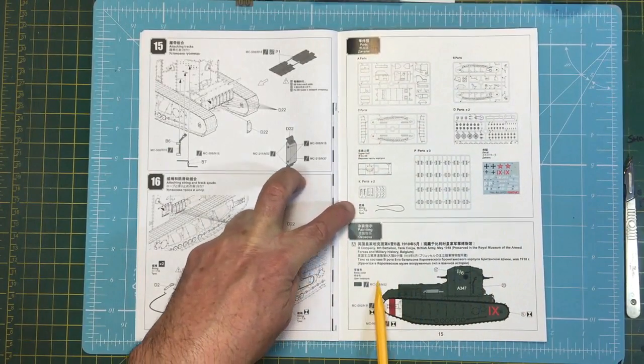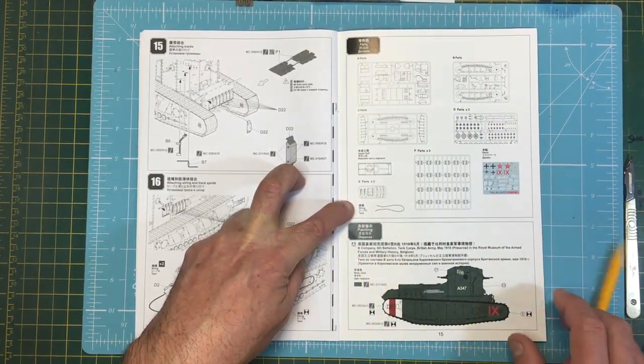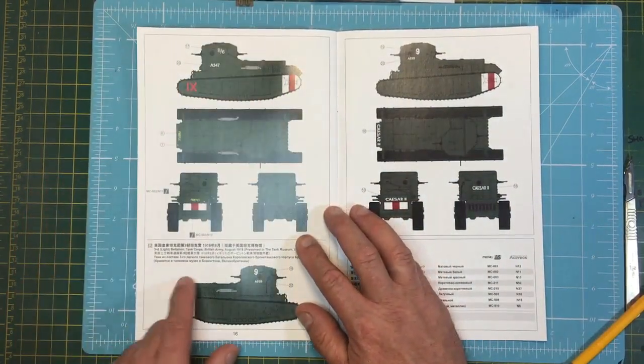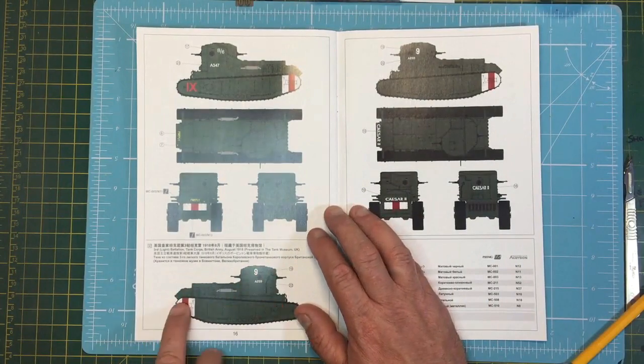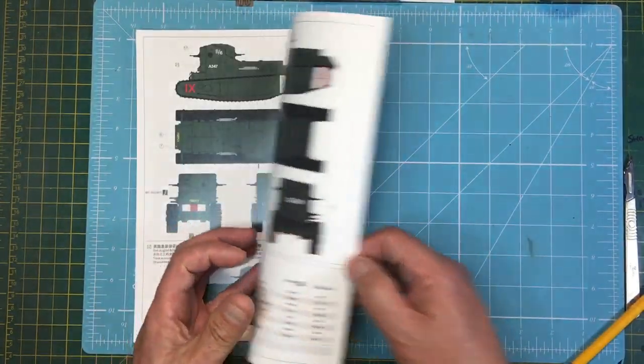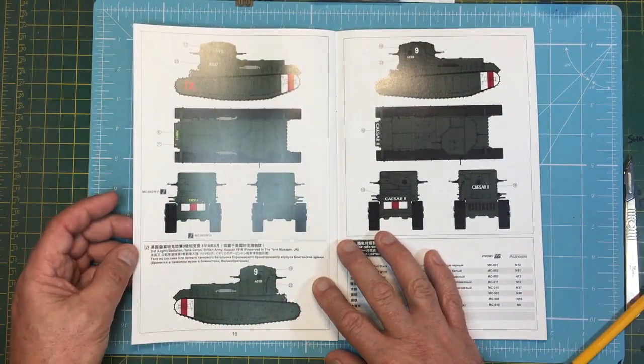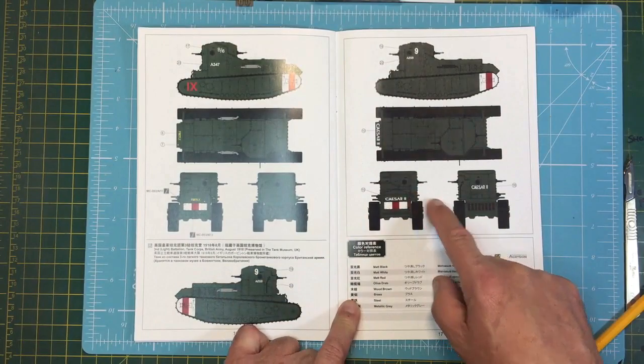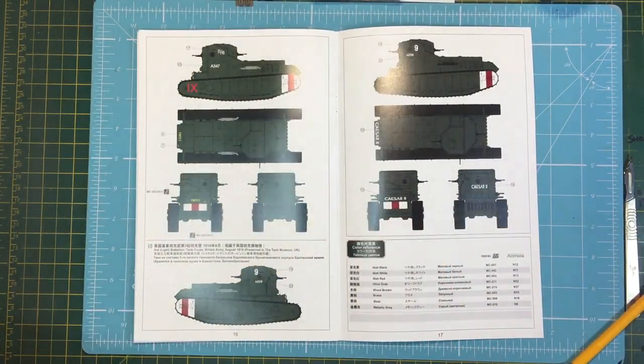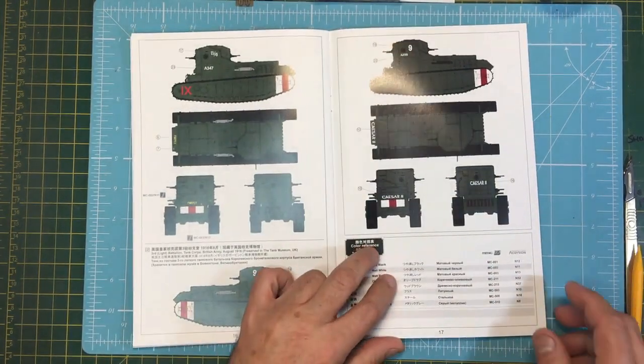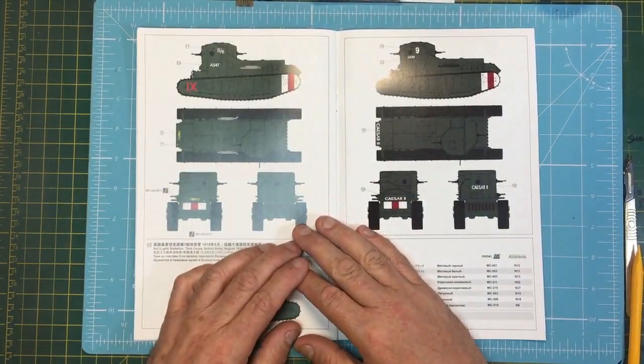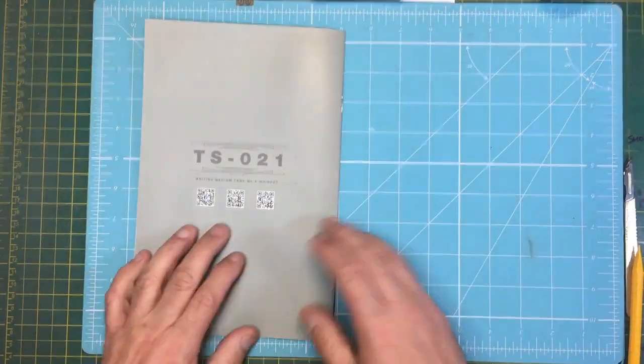Then we move on to our painting options. This is the first one, B Company Sixth Battalion, May 1918, and this one's in the Army Museum in Belgium. Then we've got option B here, and this one's this is the Bovington Tank Museum one, all green. And then we turn the page. Okay, so this is option C, but they're not telling you. So there's only two options. I thought there were three. I'm sure it said on the front of the box there were three options. Nope, there's only two by the look of it. So you get two options, both British, both simple. But you get the German and the Soviet in the decal sheet.